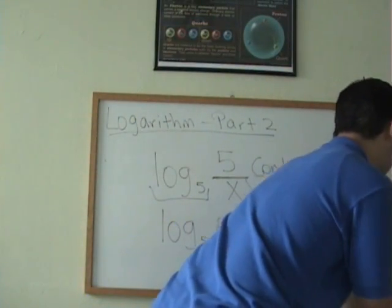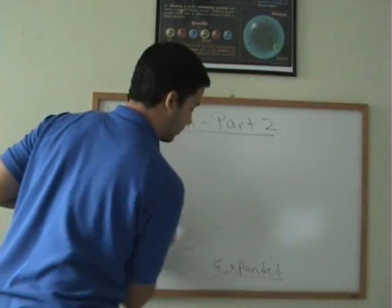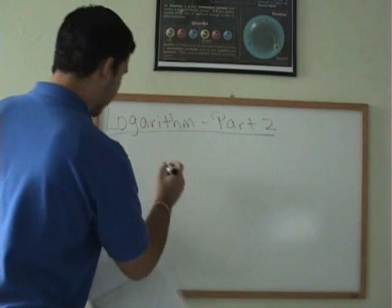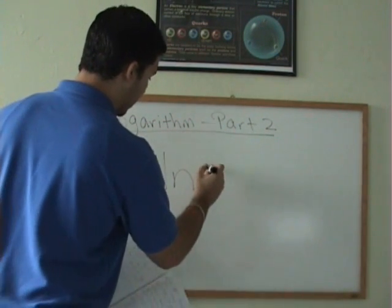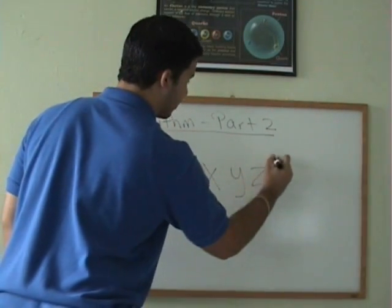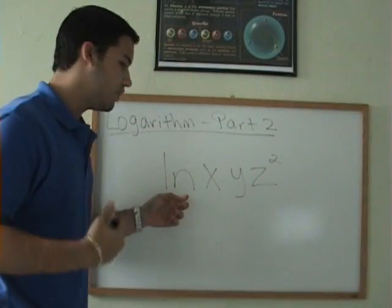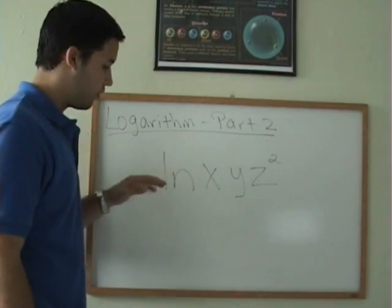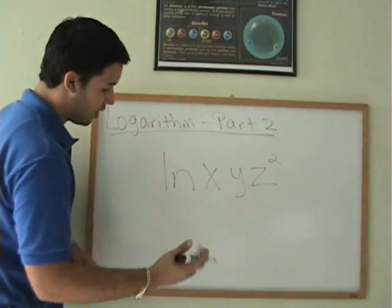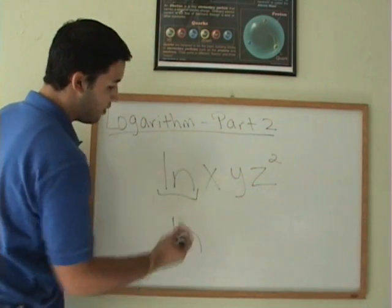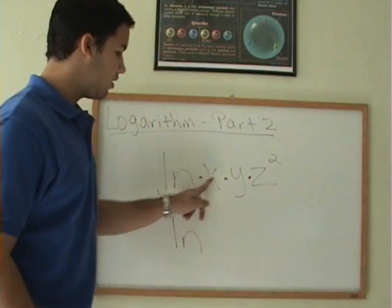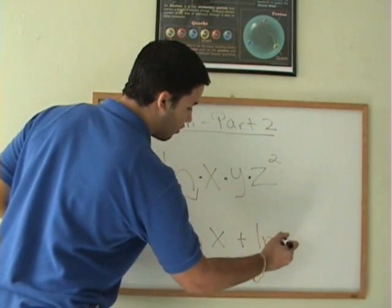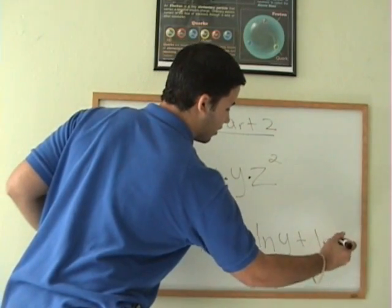Now I'm going to show you another rule that you're going to see a lot. Let's look at this one: ln(xyz²). Ln is the logarithm but with base e, so don't be intimidated when you see ln — it's the same thing, just with base e, and you do the same operations. All of this is multiplication, so the opposite of multiplication is addition. You're going to write ln(x) plus ln(y) plus ln(z²).